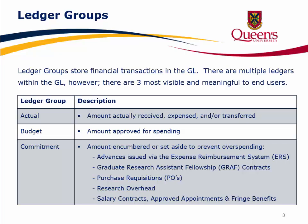The actual ledger represents the amount actually received, expensed, and/or transferred. The budget amount is the amount approved for spending. The commitment ledger represents the amounts encumbered or set aside to prevent overspending — for example, advances issued by way of the expense reimbursement system, graduate research assistant fellowship contracts, purchase requisitions, research overhead, salary contracts, approved appointments, and fringe benefits.